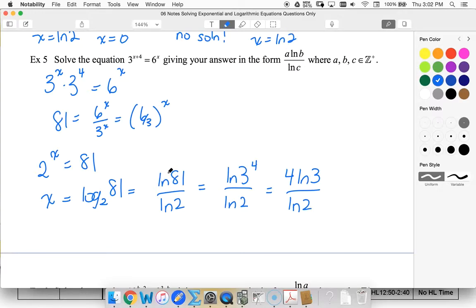And so now I have it in this form. I also could have said that 81 was 9 squared, so I could have 2 ln of 9. Both of those answers would be okay, because they would be equivalent, and they would be in this form. So, this form, I got from my change of base.